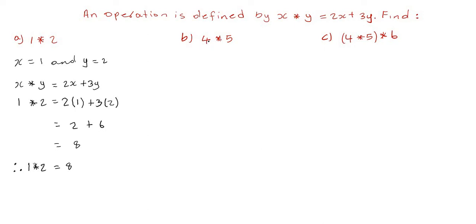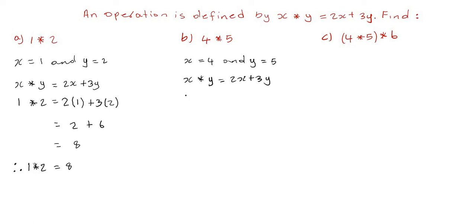That's how you evaluate this. Let's look at example 2 — we are asked to find 4 asterisk 5. The first element, 4, is associated with x, so x equals 4. The second element is associated with y, so y equals 5. We are asked to find 4 asterisk 5, so first we write the operation: x asterisk y is equal to 2x plus 3y.